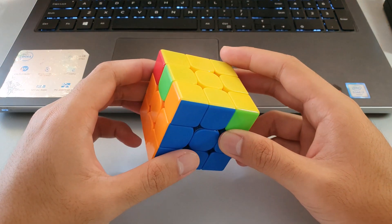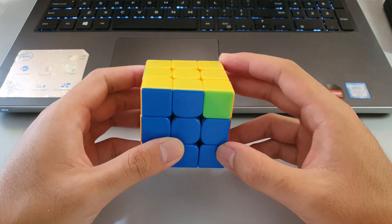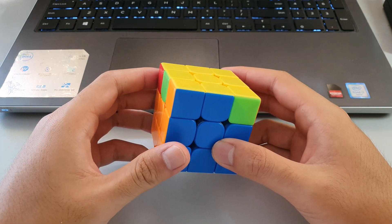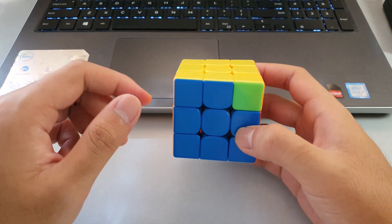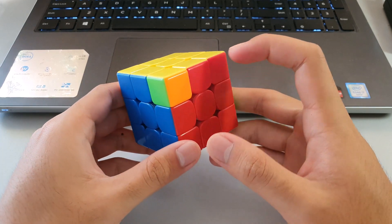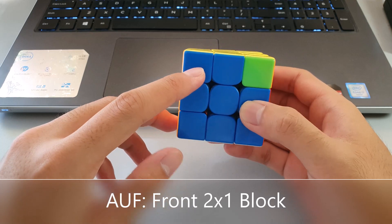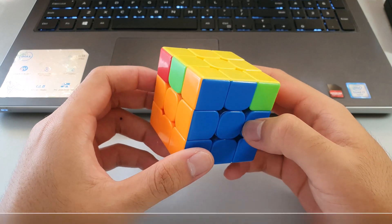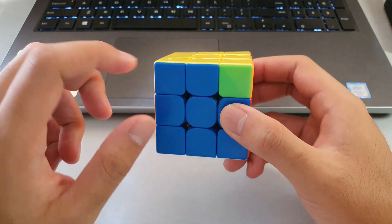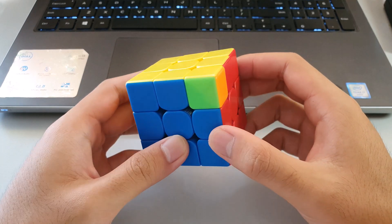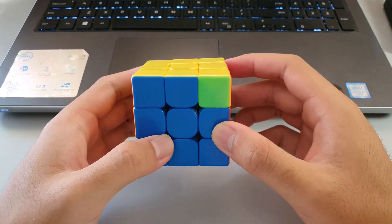Now that we know Y-perm and two more OLLs, we can talk about AUF. AUF for Y-perm can be recognized by looking at these two blocks. I normally look at this block at the front here because it's at the front, it's easier to see, and this block won't move during the algorithm, so I can use that to recognize AUF.